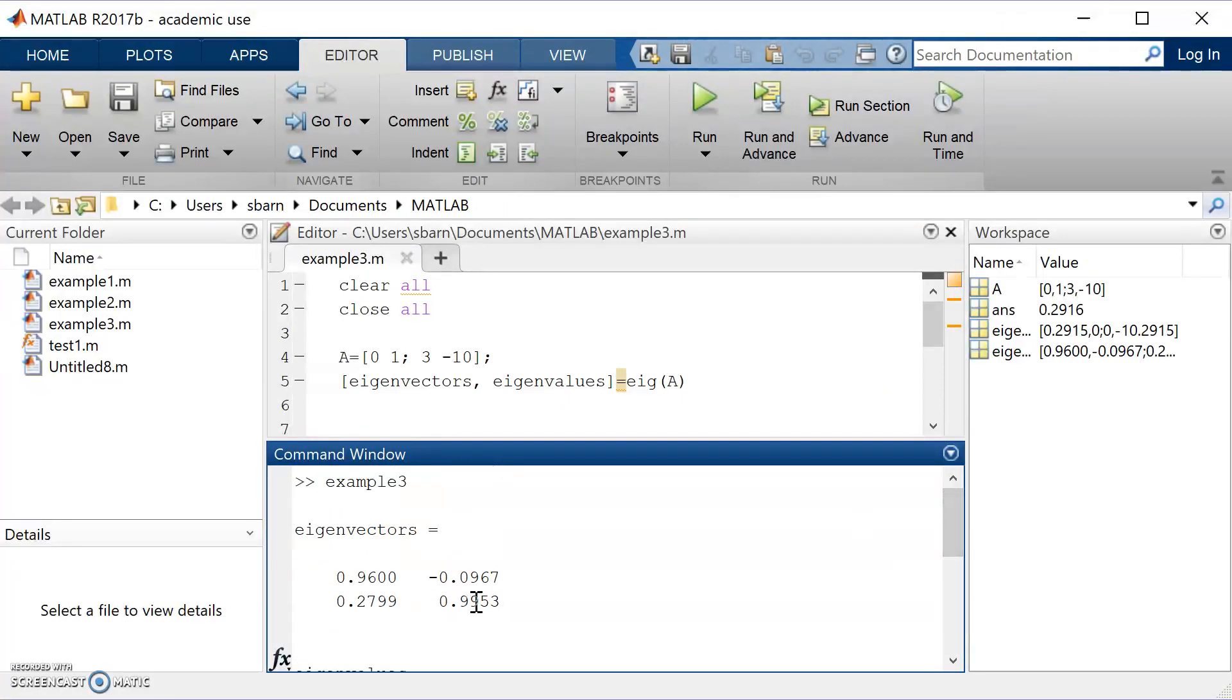So if we look here, 0.9953 divided by, I'm going to copy it this time, 0.9953 divided by this, should give us the same ratio, and it does. So negative 10.29 is what we got as well. So therefore, our eigenvectors have been verified with MATLAB.